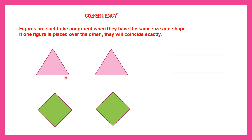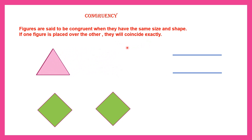Now here we have two shapes — two lines. Look at these two triangles: they are exactly the same size and the same shape. Now if I place this one on top of this triangle, will they coincide exactly? As you can see, they have coincided exactly. That means those two triangles are congruent shapes or congruent triangles.